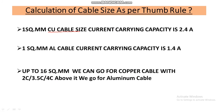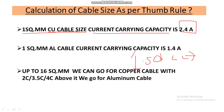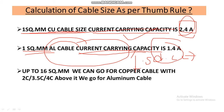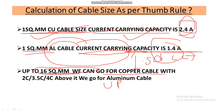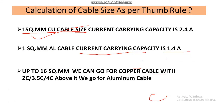For copper cable, one square mm copper cable current carrying capacity is 2.4 amperes. One square mm aluminum cable current carrying capacity is 1.4 amperes. If the calculated cable size is up to 16 square mm, then we go for copper cable. If it is more than 16 square mm, then we go for aluminum cable because of cost saving. These are the thumb rules for calculating the cable size.